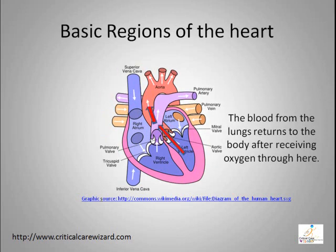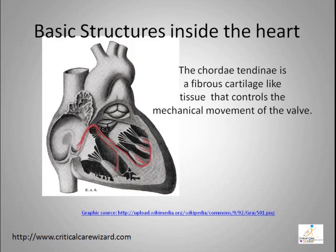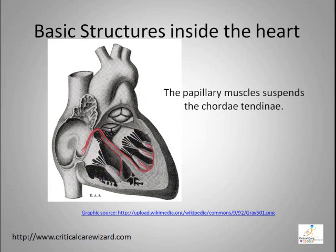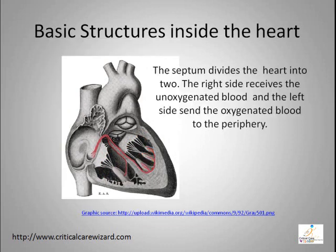The blood from the lungs returns to the body after receiving oxygen through the aorta. The structures that support the heart valve are called chordae tendinei, a fibrous cartilage-like tissue that controls the mechanical movement of the valve. The heart structure that suspends the chordae tendinei is called the papillary muscle.